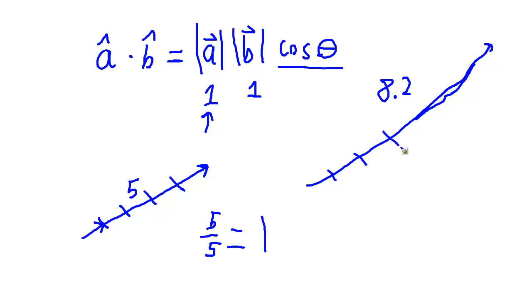Okay, so one, two, three, four, five, six, seven, eight point two. And I want to turn this vector into a vector of length one.